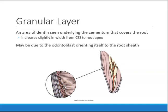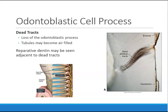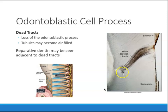Dead tracks occur when you look at a tubule and there is no odontoblast — the odontoblast has disappeared and there's just air in there. When that happens, it's a dead track or dead tubule. Anytime you see a dead track, it could be a sign of trauma, and tertiary dentin may be deposited. You'll normally see tertiary dentin very close to the dead tracks.